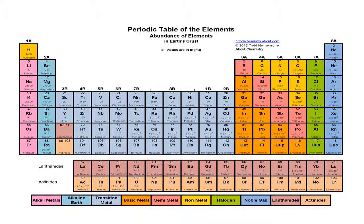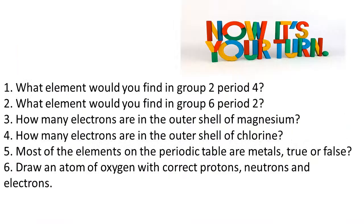That's a quick look around the periodic table. You now know which elements are metals and which aren't, what groups one, seven, and eight are, some of their properties, and that the group number equals the number of electrons in the outer shell. There are six questions for you — pause the video, have a go, and check your answers. Thanks for watching.